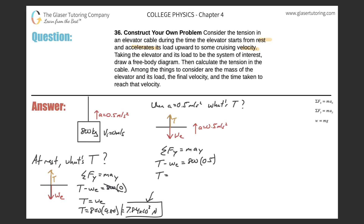The weight of the elevator is the same as before — 7.84 times 10³ newtons. Adding the weight to the right-hand side: tension equals 800 times 0.5, plus 7.84 times 10³. Notice we're adding the weight to it, so tension is going up. The math works out to 8.24 times 10³ newtons.